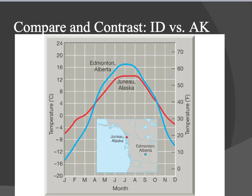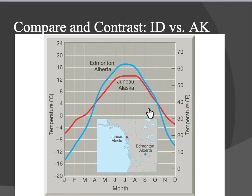Let's look at this graph comparing two different climates. Juneau, Alaska is the one in red, and Edmonton, Alberta, which is in Canada, is the one in blue. You notice Edmonton, Alberta has the coldest temperatures but also the highest temperatures, giving it the highest temperature range. Compared to Juneau, Alaska, which has a smaller range. If you look at the map, Juneau is next to the water, so water heats and cools much slower than land. Edmonton is totally surrounded by land, which heats and cools really quickly.